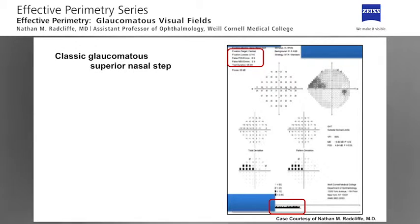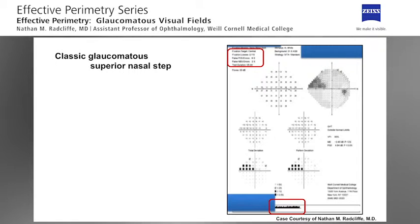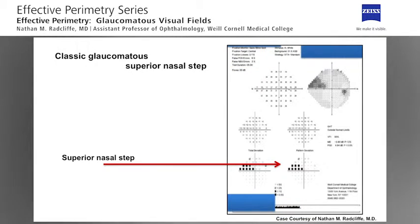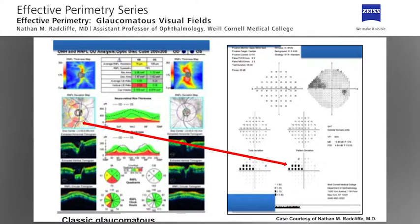Here is the visual field for a 67-year-old woman with primary open-angle glaucoma. Despite an acceptable level of fixation losses, false positives and false negatives, we see, looking at the gaze track, that there are many losses of fixation throughout the test. However, at the pattern deviation plot, we see a classic superior nasal step appearance, which is characteristic of glaucoma. Examining the OCT report, we see a corresponding inferior retinal nerve fiber layer defect that confirms the diagnosis.